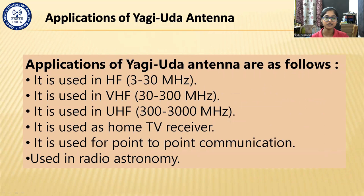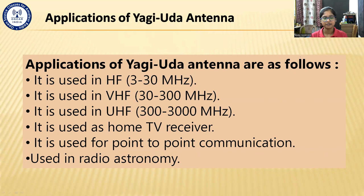Applications of the Yagi-Uda antenna. It is used in the high frequency range of 3 to 30 MHz. It is used in the very high frequency range of 30 to 300 MHz. It is used in the ultra high frequency range of 300 to 3000 MHz. It is used as a home TV receiver in some old households. It is used for point-to-point communication. It is also used in radio astronomy — the study of celestial objects that emit radio waves.